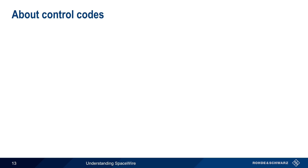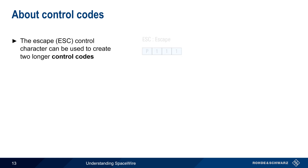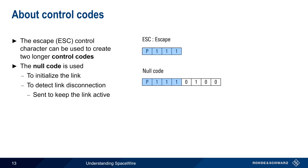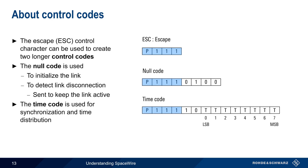Now let's come back to control codes. The escape control character can be used to create two longer control codes. The first is the null code, which is used both to initialize the link as well as to detect link disconnection — that is, nulls are transmitted to keep the link alive. The second control character is the time code, which is used for synchronization and time distribution, a topic we'll cover shortly.